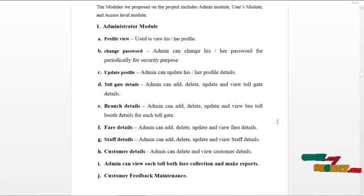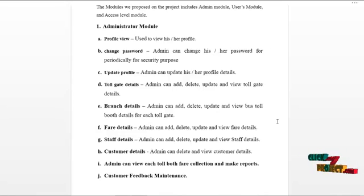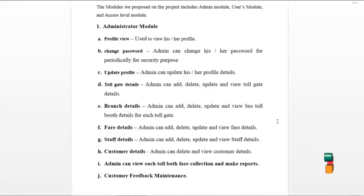Let's start from the admin module. Admin can log in to the system and access the following services. Admin can view and update their own profile details, and change their password routinely for security reasons. Admin is responsible for creating company details, staff details, branch details, and tollgate details. Admin can perform update, view, and delete operations on the above details.